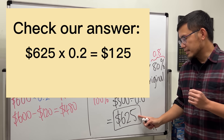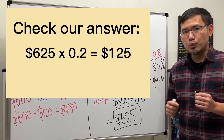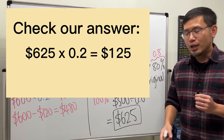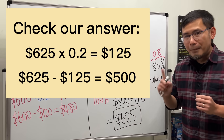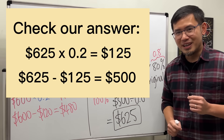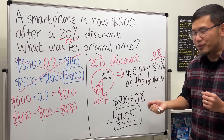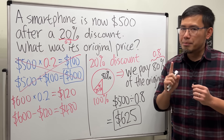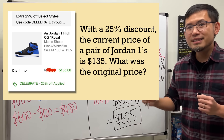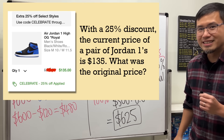Let's check our answer. Take 20% of 625: multiply 625 by 0.2 and we get 125. Then 625 minus 125 gives us 500 — and that's the correct answer. Hopefully this is clear. Before we go, here's a question for you to try — leave your answer in the comments and let me know what you get!